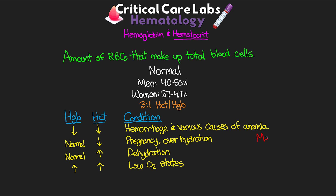It is important to know that some medications can alter the hematocrit levels. We can see increases in hematocrit with medications like clozapine, carvidolol, atropine, and cefoxitin. And then we can see a reduction in hematocrit with phenytoin, theophylline, enelopril, lisartan, and dipyrone. So that's our hematocrit.